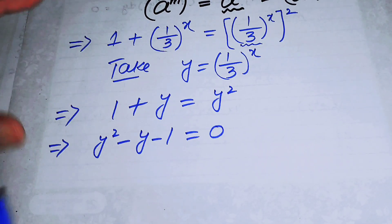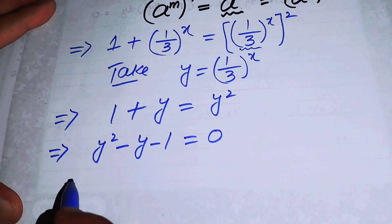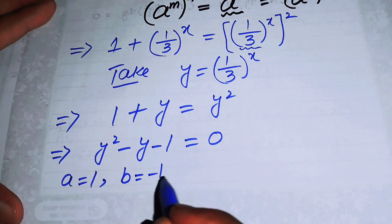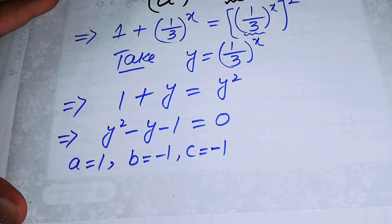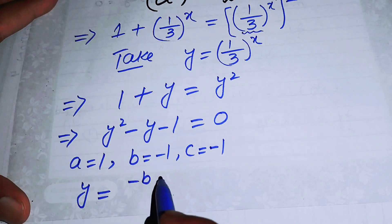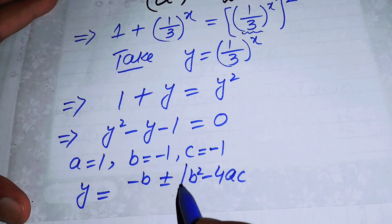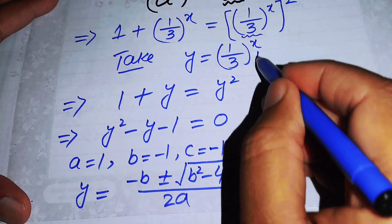We use the quadratic formula to solve this equation, where a equals 1, b equals negative 1, and c equals negative 1. The quadratic formula is y equals negative b plus or minus the square root of b squared minus 4ac, all over 2a.